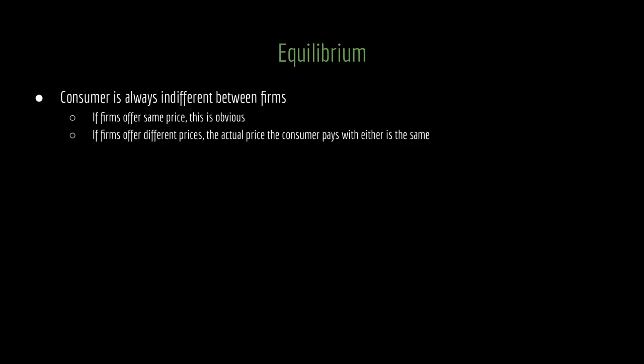First, let's note that the consumer is always indifferent between firms when we have low price guarantees. If the firms are offering the same price, the consumer gets the same price regardless of where they go. The trick to low price guarantees is that if firms offer different prices, the actual price the consumer pays at either firm is the same. If one firm offers $20 and the other offers $40, the consumer could go to the $20 firm and pay $20, or go to the $40 firm and still pay $20. The consumer is indifferent.